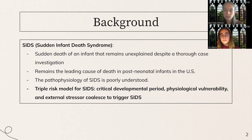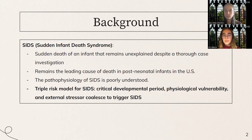The triple risk model requires three factors to coalesce to trigger the syndrome: a critical development period, which is the two to four months directly after birth; physiological vulnerability; and an external stressor, which can be the sleep environment.